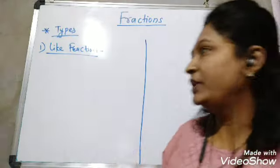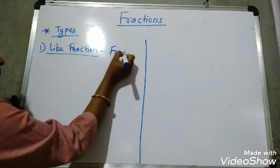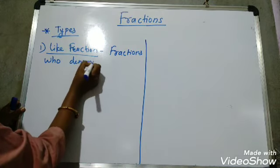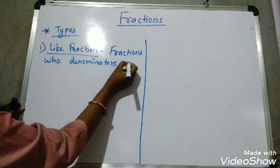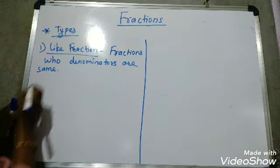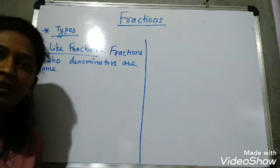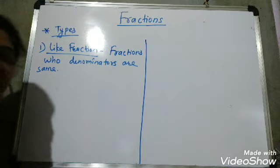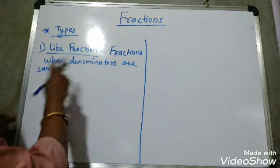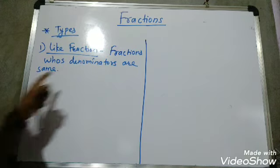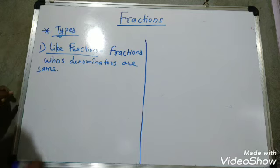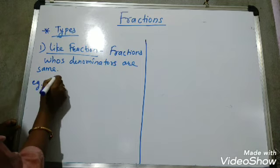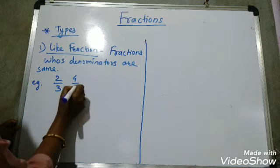So what are like fractions? Like fractions are fractions whose denominators are the same. Let's see an example: 2 upon 3 and 4 upon 3 — these are like fractions because their denominators are both 3.